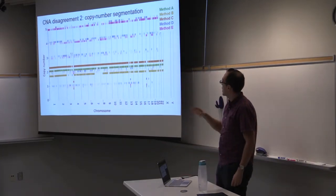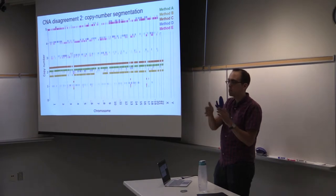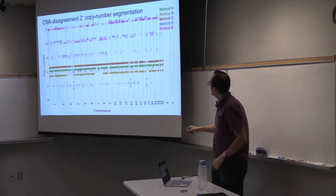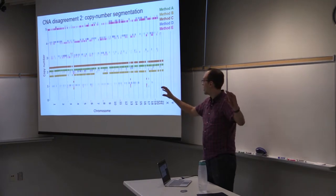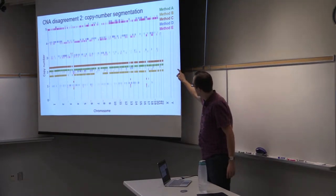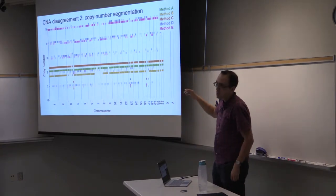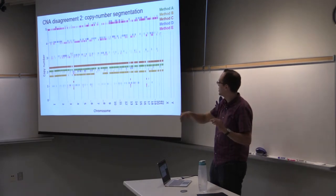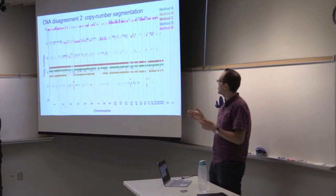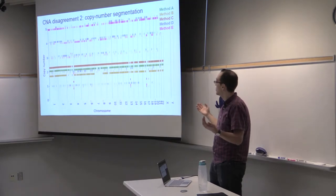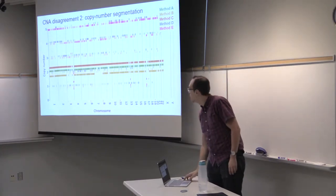The second issue concerns copy number segmentation. Our goal when calling copy number is to break the genome into regions of constant copy number, to figure out what points in the genome correspond to changes in copy number. Here, this is a different patient with five methods. Three of those think that we have a mostly contiguous profile, basically diploid all the way across. But the other two methods, D and E corresponding to pink and purple, produce a much more fragmented profile. As we go across the genome, we're rapidly jumping between total copy numbers of one, two, three, four, five. It's not easy to look at this and say which method is right, but clearly if we want to come to any agreement, we need some strategy for resolving this.